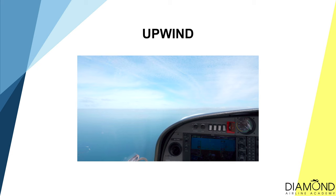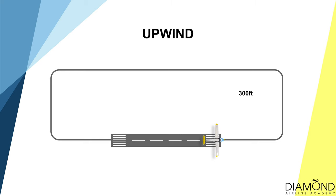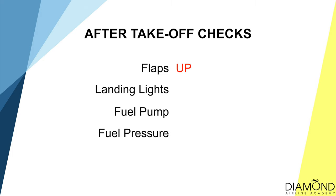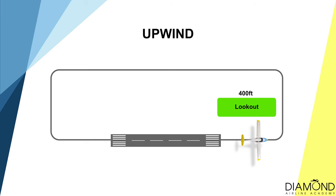When rotation speed is achieved, gently pull back on the controls to raise the nose and take off. Right after take-off, the correct climb-out attitude is dash on the horizon, and the climb-out speed is 70 knots. Maintain this attitude and speed until reaching 300 feet. At 300 feet, perform the after-take-off checks: flaps up, landing lights off, fuel pump off, and fuel pressure checked in the green. Then keep climbing straight until reaching 400 feet and start the look-out.